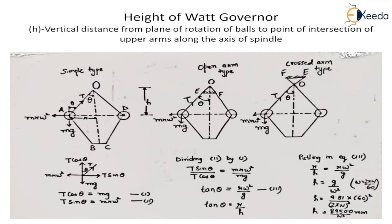Now let's see the derivation to determine the height of the Watt governor. The height of the governor is the vertical distance from the plane of rotation of the balls to the point of intersection of the upper arms. The point at which these two upper arms intersect is called point O, and this distance is called the height of the Watt governor.